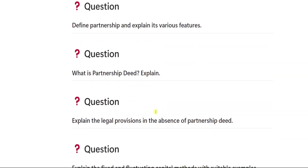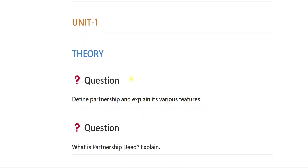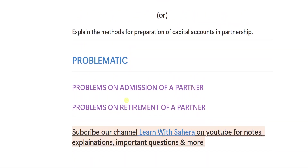If you get prepared with these four questions, definitely you will be attempting one question from unit number one. In the ninth question, A or B will be a theory question, and you will definitely be getting 12 marks from unit number one if you attempt this theory. In the problematic section, you may expect a problem on admission of partner or retirement of partner — definitely one problem will be there on admission or retirement. So make sure you are perfect with both. Unit number one is completed. Now let us go to unit number two.